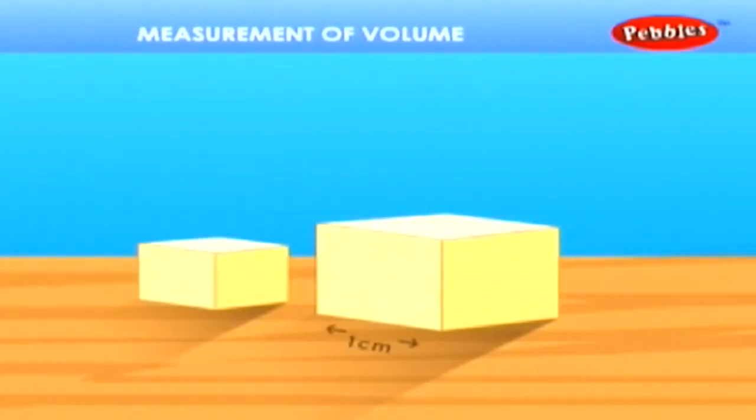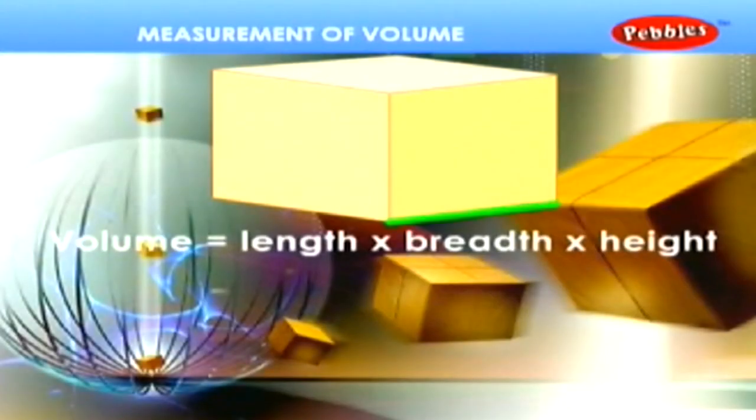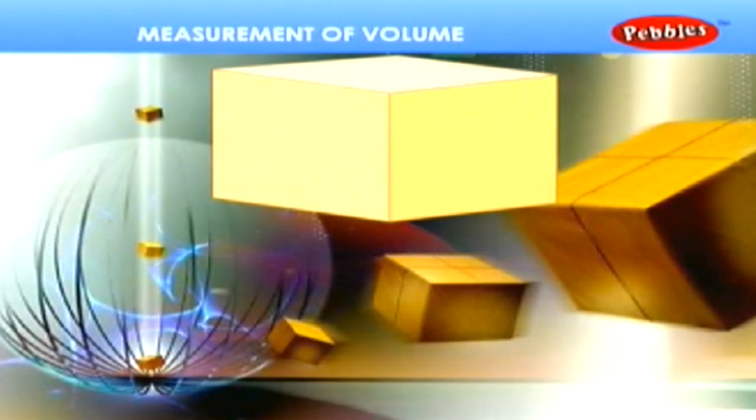Here is a block of length 1 cm, breadth 1 cm and height 1 cm. Now, the capacity of the block to hold something inside it is known as its volume. The volume of this block is the product of its length multiplied by breadth multiplied by height. 1 cm into 1 cm into 1 cm is equal to 1 and its unit is cm³. Therefore, the volume of this block is 1 cm³. Volume is equal to length into breadth into height.